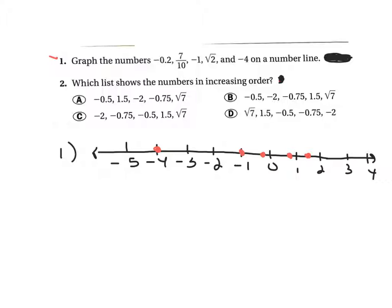It says which list shows the numbers in increasing order. The first list is out of order because that right there, the negative two, is the smallest number in the list. And all these lists have the same numbers. So I'm looking for a list that starts with negative two. Which looks like it's gonna be C. But let's check it out just in case.